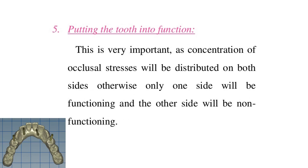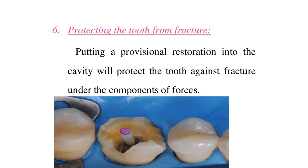Fifth, putting the tooth into function: this is very important as concentration of occlusal stresses will be distributed on both sides; otherwise, only one side will be functioning and the other side will be non-functioning. Sixth, protecting the tooth from fracture: putting a provisional restoration into the cavity will protect the tooth against fracture under the components of forces.